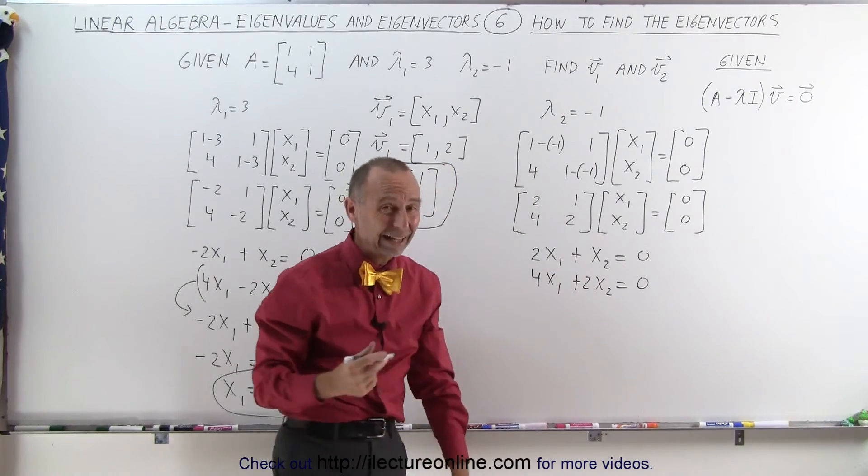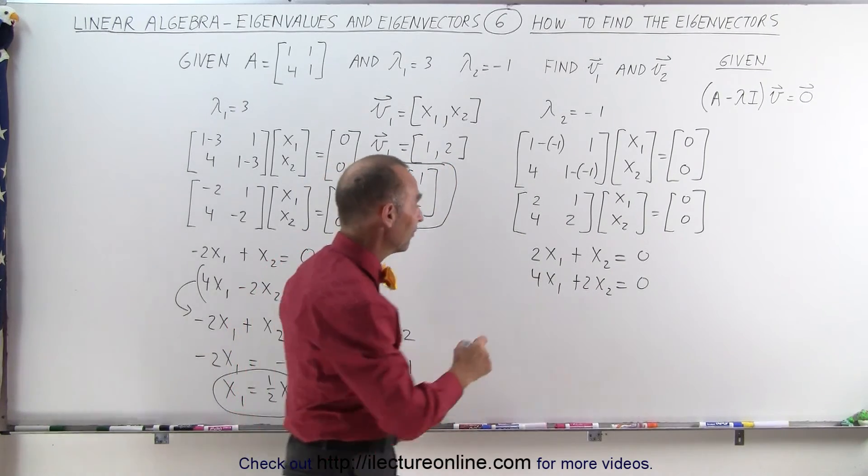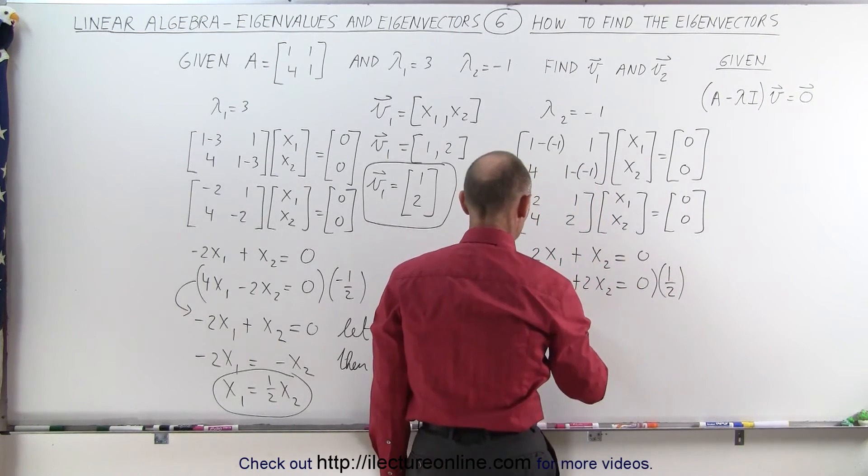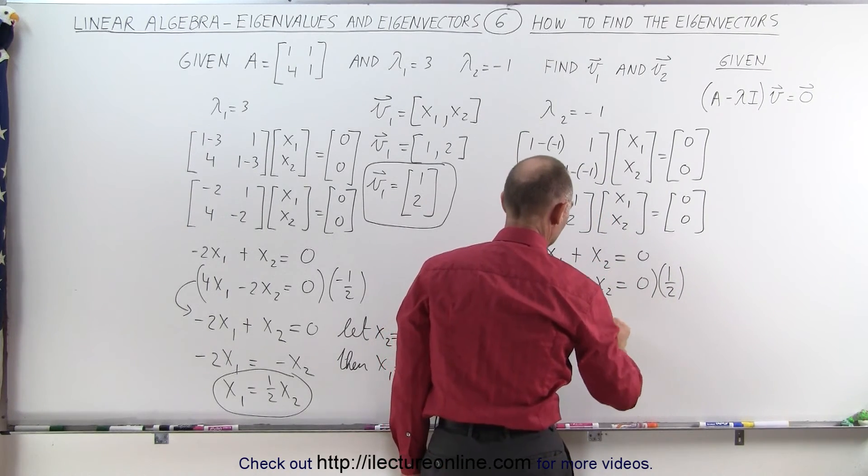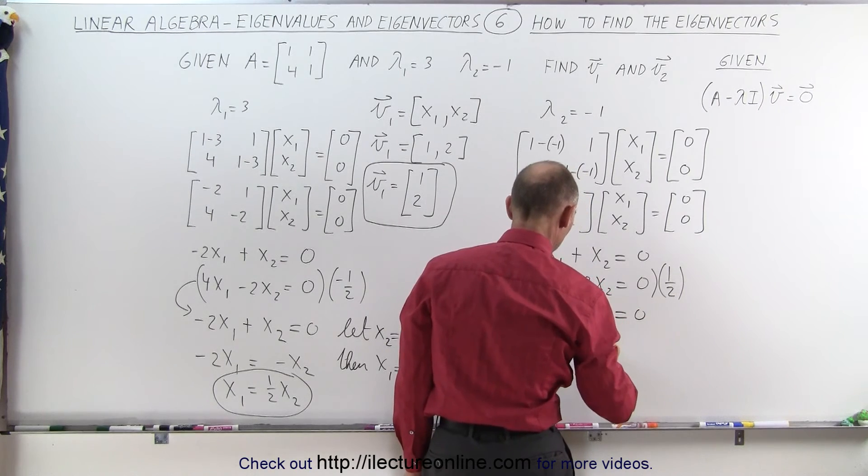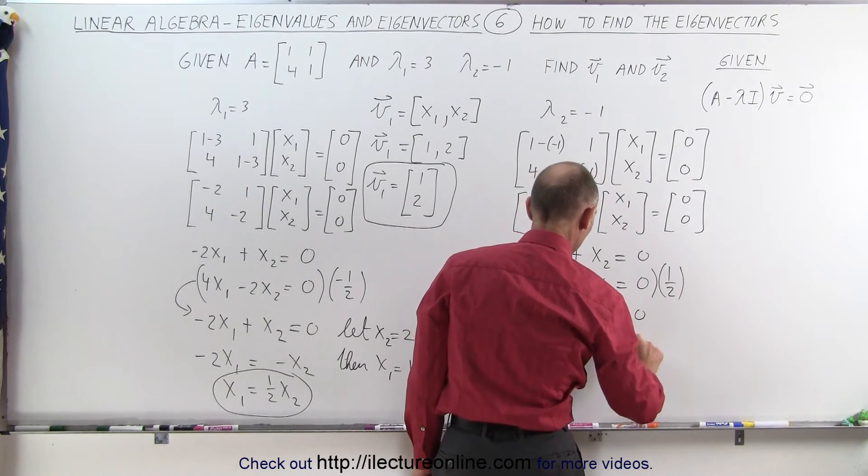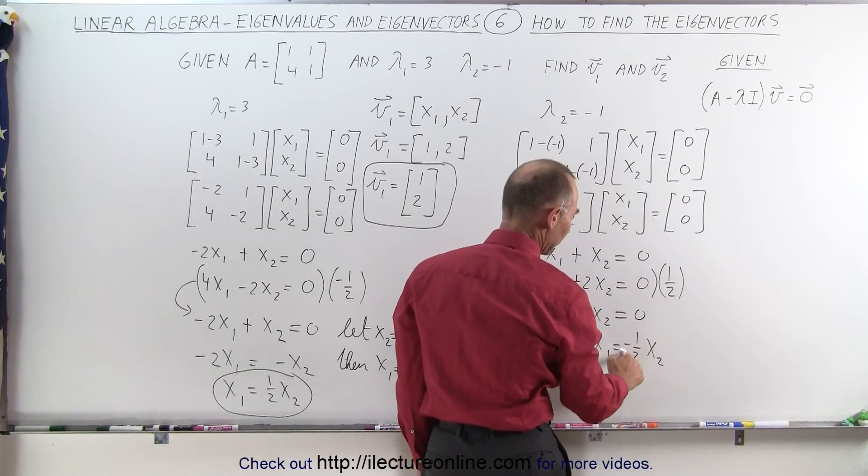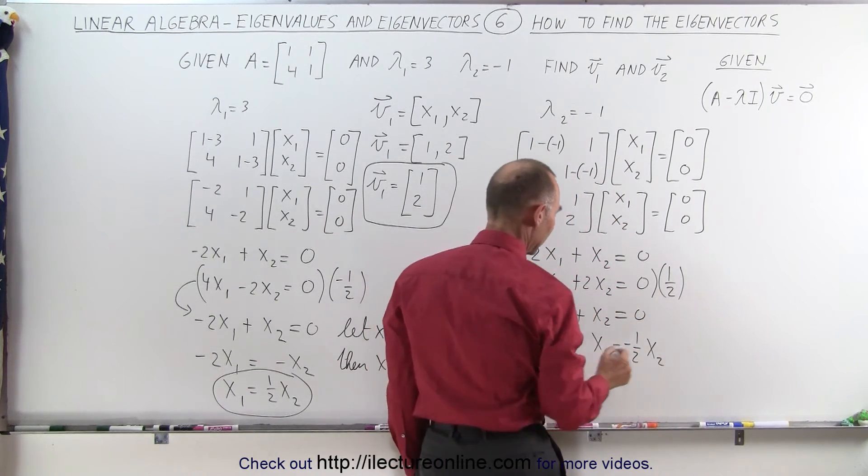And again, you can see that those are the same equation. If I divide the second equation by half, or multiply by 1 half, then I get 2x1 plus x2 equals 0, or x1 equals minus 1 half times x2, by moving the x2 across becomes negative, and dividing both sides by 2.